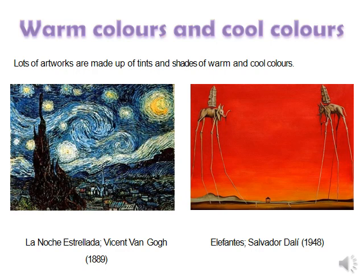Let's see some famous painting examples. Lots of artwork are made up of tints and shades of warm and cool colors. The first one is Vincent van Gogh's La Noche Estrellada — it uses cool colors, especially the touch of blue throughout the painting. The second one is named Elephant by Salvador Dali, which uses warm colors — you can see the red and orange tones throughout that painting.